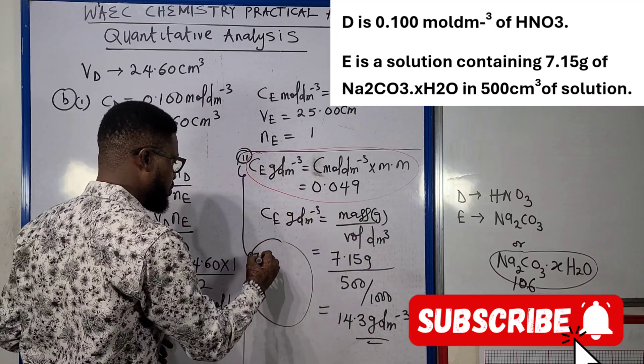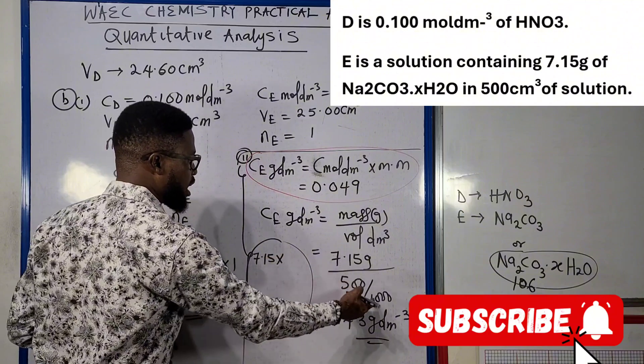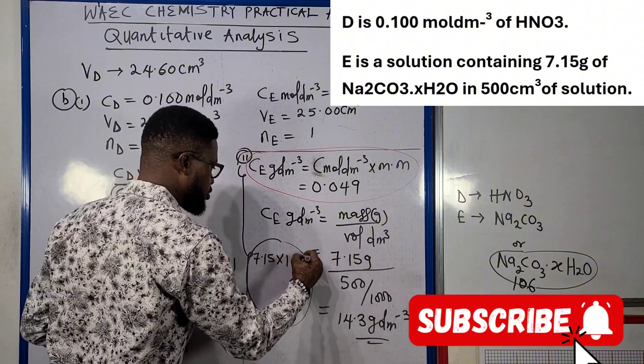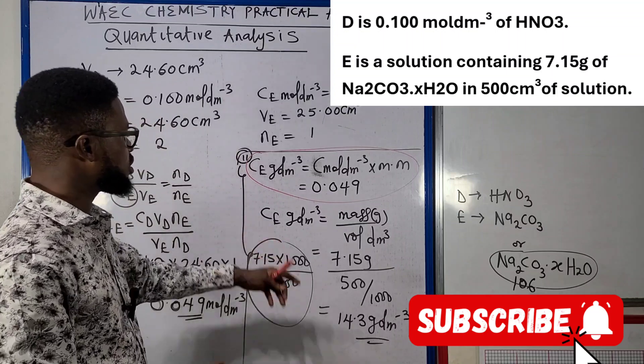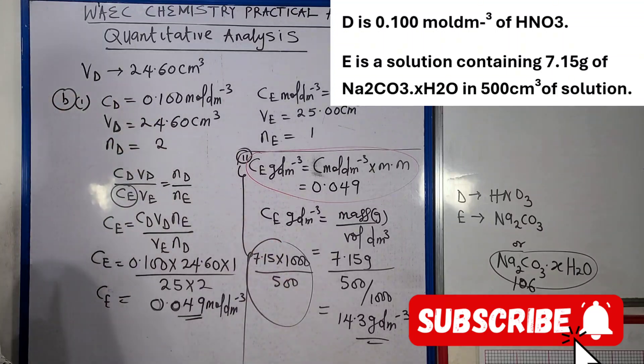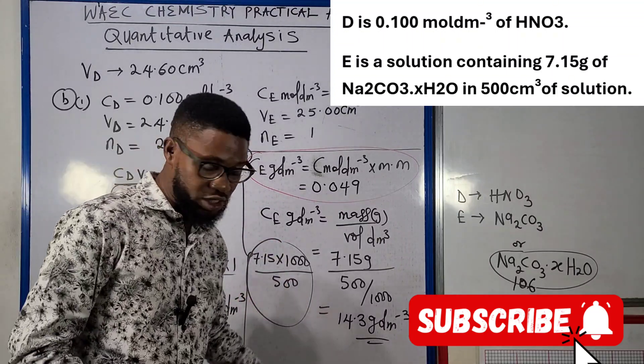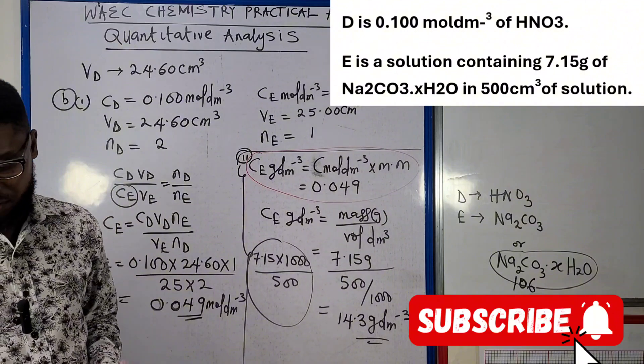When we do this, what our answer will be when we compute is going to be 14.3 gram per dm³. What you're going to calculate is 7.15, 1000 is going to move up times 1000 divided by 500. Concentration of E in gram per dm³ is going to be 14.3 gram per dm³ and that ends that.